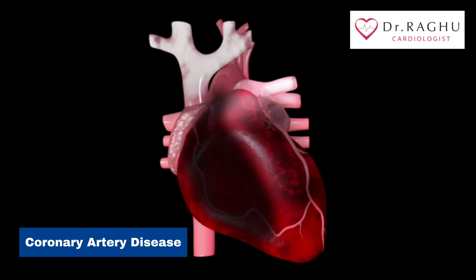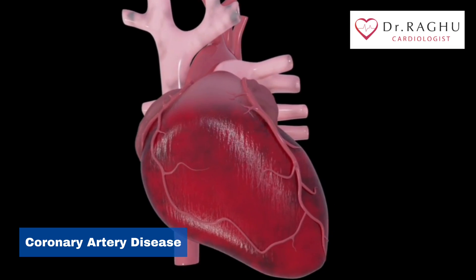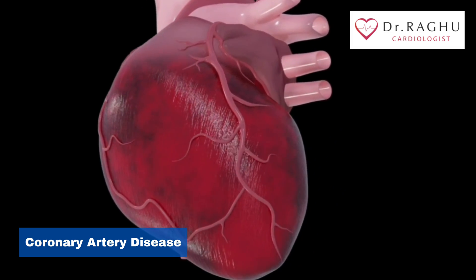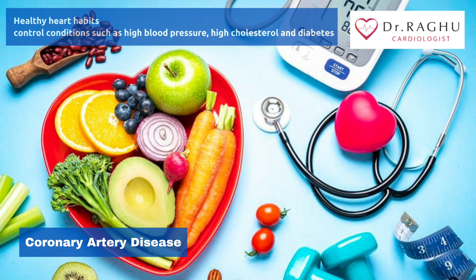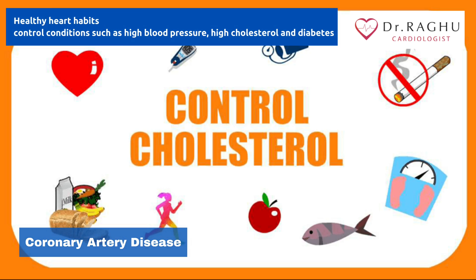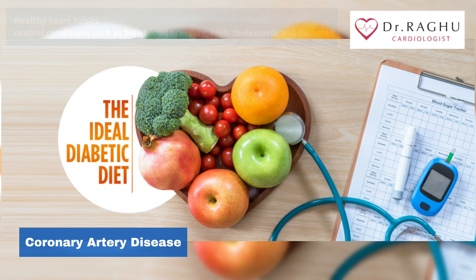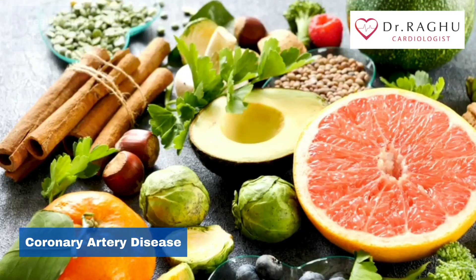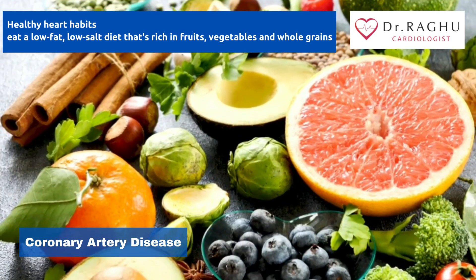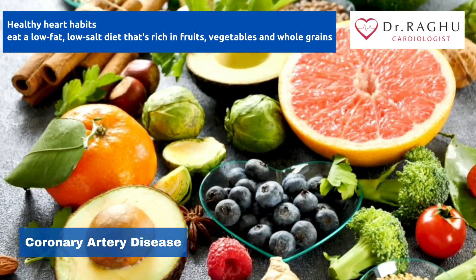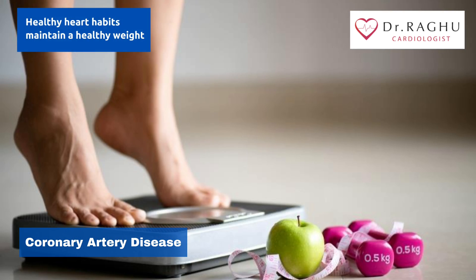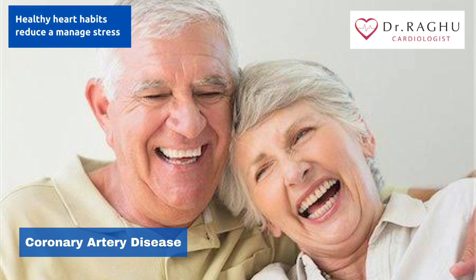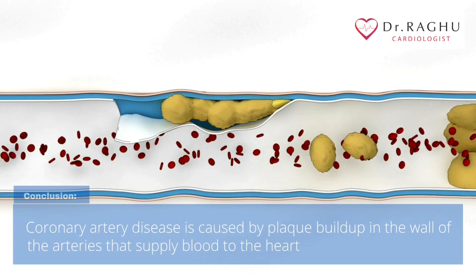The same lifestyle habits used to help treat coronary artery disease can also help prevent it. To improve your heart health: quit smoking; control conditions such as high blood pressure, high cholesterol, and diabetes; stay physically active; eat a low-fat, low-salt diet rich in fruits, vegetables, and whole grains; maintain a healthy weight; and reduce and manage stress.